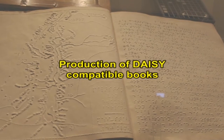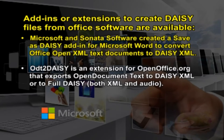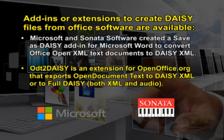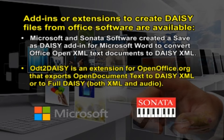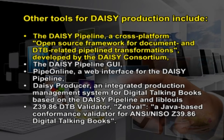Now let us discuss how we can produce DAISY-compatible books. Add-ins or extensions to create DAISY files from Office software are available. Microsoft and Sonata software created a Save as DAISY add-in for Microsoft Word to convert Office Open XML text documents to DAISY XML. OD2DAISY is an extension for OpenOffice that supports Open Document Text to DAISY XML, or to full DAISY, that is both XML and audio. Other tools for DAISY production include the DAISY Pipeline, a cross-platform open source framework for document and DTB-related pipeline transformations, developed by the DAISY Consortium itself.